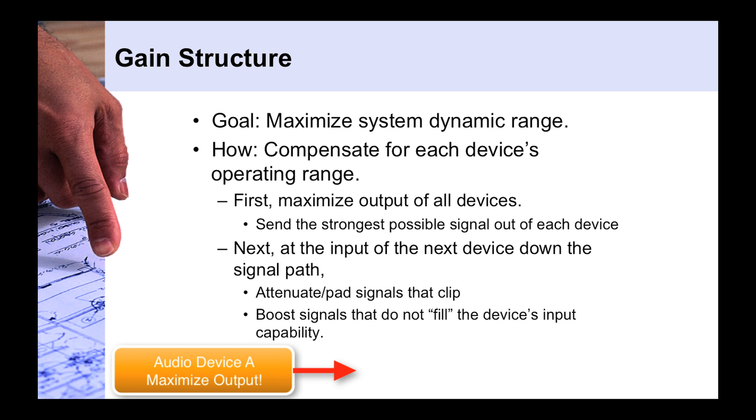Because at the input of the next device, that's where we worry about if the signal is too strong, then we attenuate it or pad it at the input. Or if it's not quite strong enough, let's say the input capability is greater than the output capability of the device before it, then we can boost it a little bit more at the input of that device.